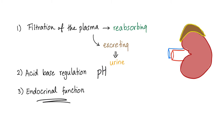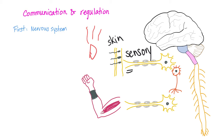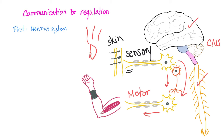Let's talk about communication. You have the very fast nervous system, composed of neurons or nerve cells. It starts usually in the skin to pick up stimuli. Let's say that you're touching a hot object. The sensory neuron will tell your CNS — central nervous system, which is the brain and the spinal cord — that there is something hot here. It will relay that through an interneuron to a motor neuron, to tell your muscles to pull your hand away from the hot object.